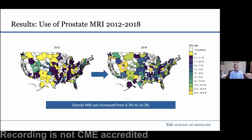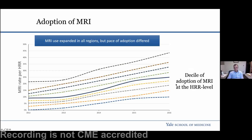When we looked at each hospital referral region, the colors represent the proportion of patients who received a prostate MRI in 2012 to 2018. Starting with MRI first, there were overall really sharp increases, but it was quite variable — with some regions not adopting prostate MRI at all, and in some, the majority of patients were receiving testing. You can also see this mapped out by decile, showing the highest adopting regions versus the lowest adopting regions.